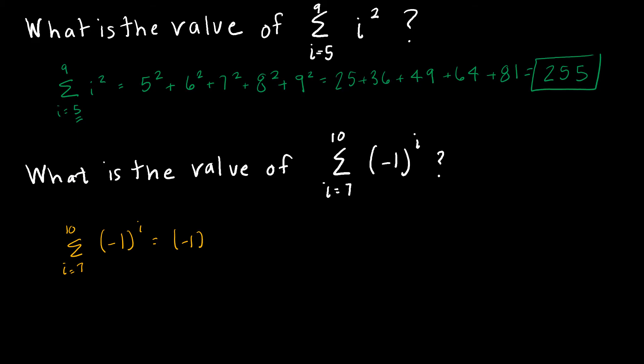So I have negative 1 to the 7th because that's my starting point, and then I'm increasing by 1: negative 1 to the 8th, increasing by 1: negative 1 to the 9th, increasing by 1: negative 1 to the 10th, and I stop at 10 because that's my upper limit.